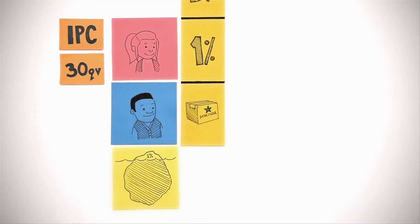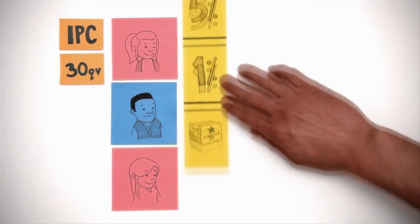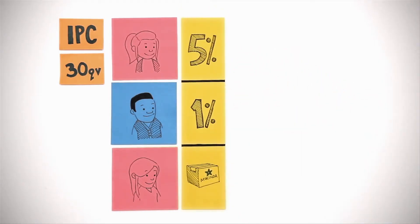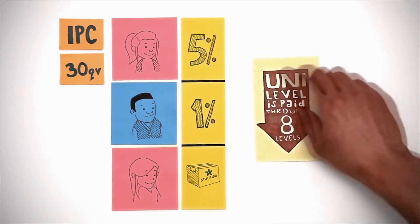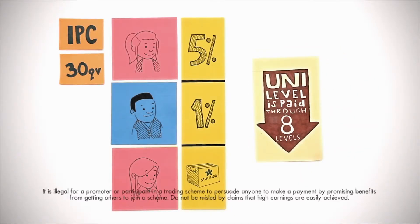Here's what makes Unilevel so great. Once Dan sponsors an IPC who makes a purchase, Dan gets 1%, and Lucy now earns 5% from that new IPC's purchase. That's because Unilevel commissions are paid through 8 levels. So, the deeper you build your organization, the bigger the percentage you earn.